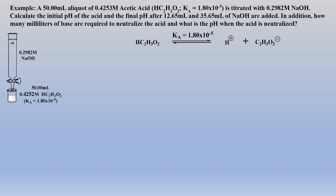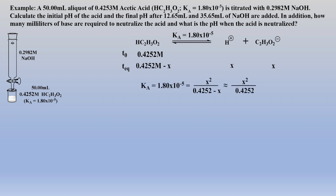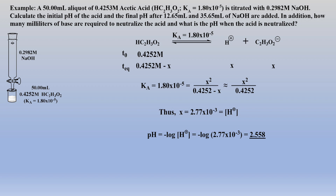Understanding acid strength is simply examining the stability of the conjugate base. Now let's include the initial concentration of acid at T₀ and the change in concentrations at equilibrium. We can substitute the equilibrium concentrations into the expression for Ka. The denominator can be simplified employing the 5% rule, which was discussed in detail in Part 1, to afford a much easier calculation. X, the proton concentration, is now easily calculated, followed by a pH calculation. Note the log sig fig rule: when taking the log of a number with 3 sig figs, one must report 3 sig figs after the decimal point.